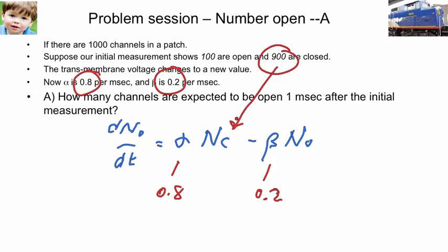The number closed at the beginning of the segment was 900. The number open at the beginning of the voltage transition, sorry, right at the end of the voltage transition, the beginning of the time with the new voltage, that's 100. So if we put all those numbers in there, we can compute all the quantities on the right.